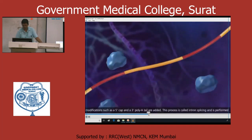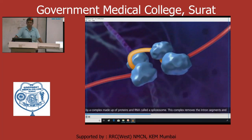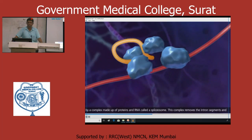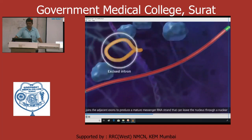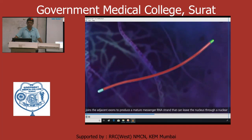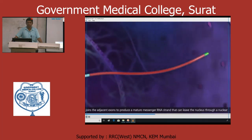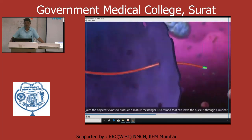This is a spliceosome. The spliceosome will make the mature mRNA. This complex removes the intron segments and joins the adjacent exons to produce a mature messenger RNA strand. This is the mature RNA.